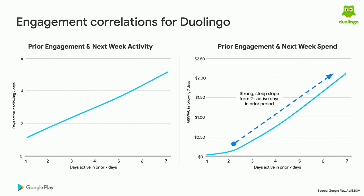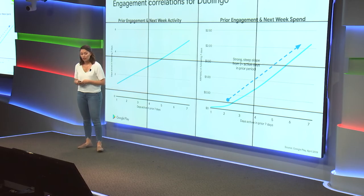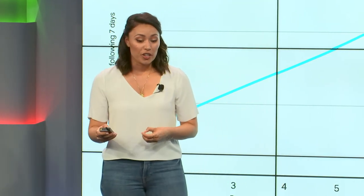For spend, we see very strong correlation as well. With Duolingo specifically, there's a very strong increase in the engagement-spend slope for users who are active more than two days a week. Thinking back to the motivators — someone uses Duolingo to learn a language and drive self-improvement — Duolingo reinforces this with progression and completion of lessons. A user engaging only one or two days of the prior period has a much lower spend correlation, because they're probably not progressing and actually learning the language. But as engagement increases, we see stronger correlation, because these engaged users are clearly seeing value. This shows even stronger monetization than some games, driven by sustained and optimized engagement.